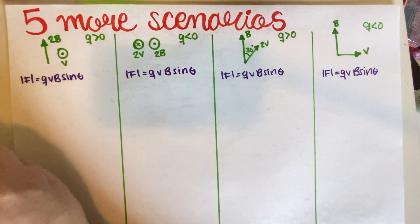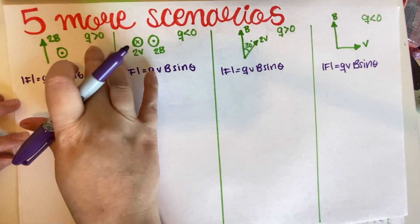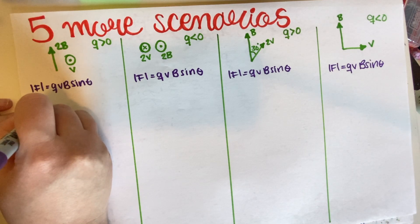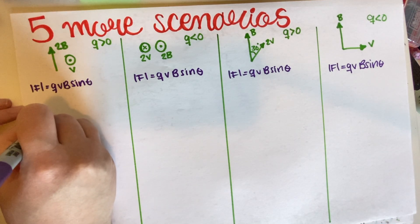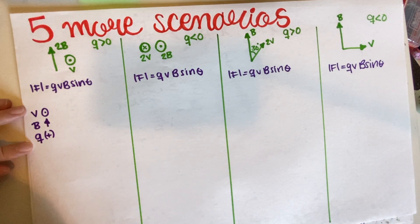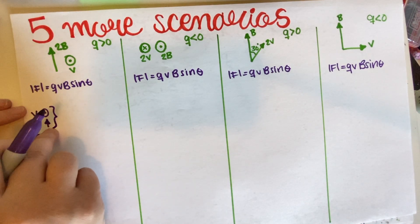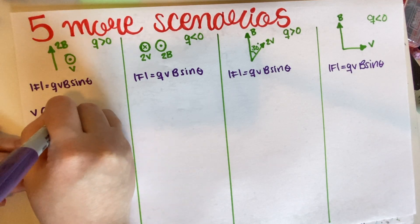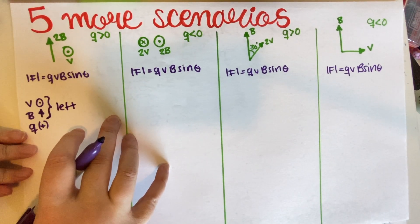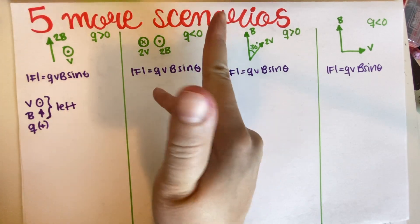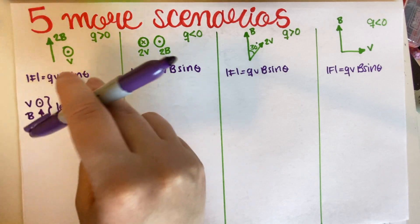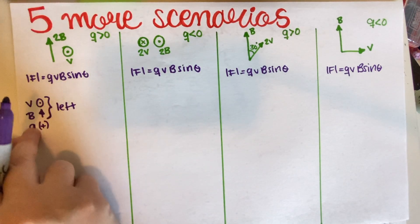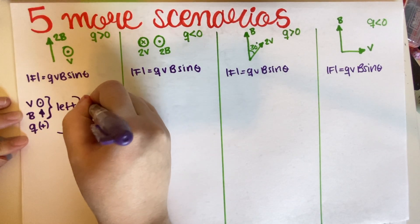For scenario 1, the charge is positive and it's moving into the page. The magnetic field is going up and the charge is positive. If I use my right-hand rule, the force is going to the left. If you want to know how to use the right-hand rule, I recommend going through your DL notes — the 7C version uses three fingers. But using the right-hand rule here gives us left, and since the charge is positive your answer stays left.